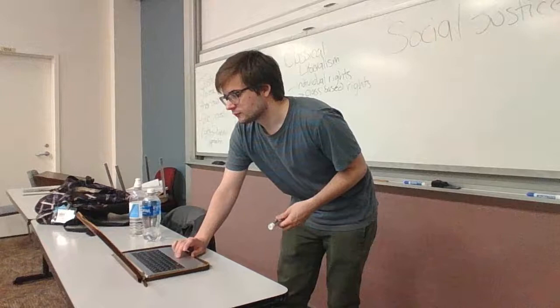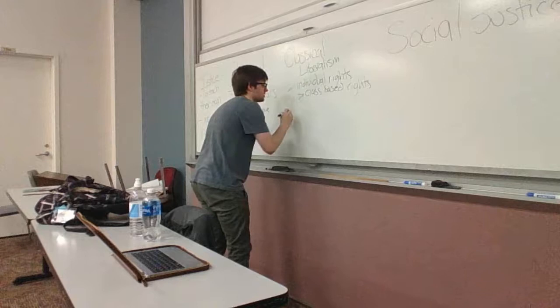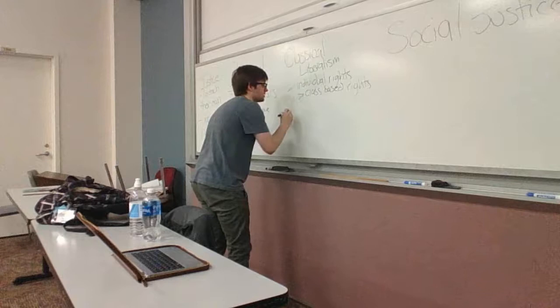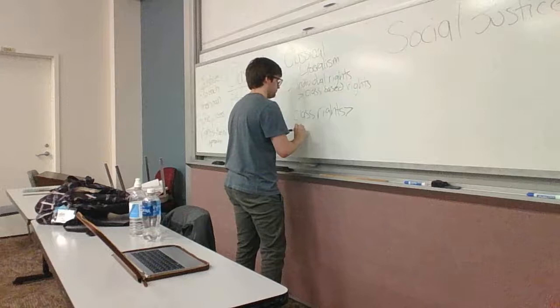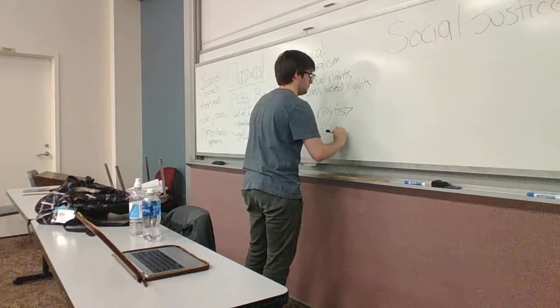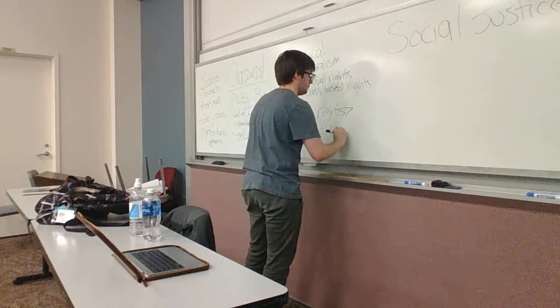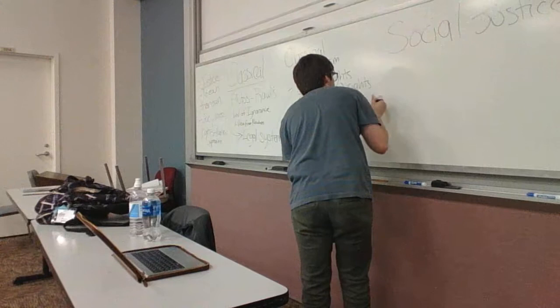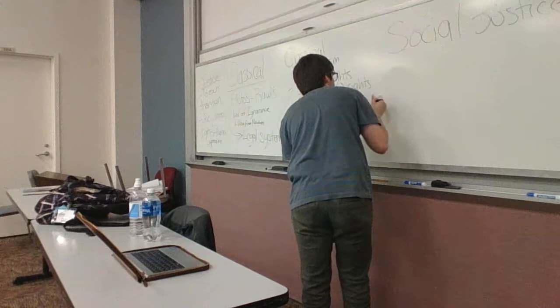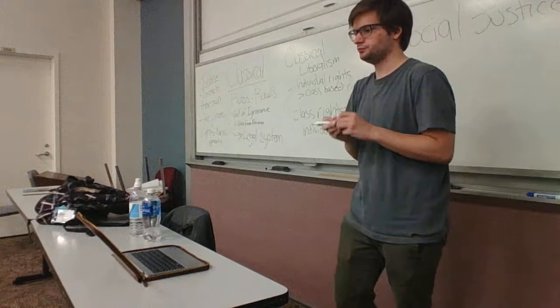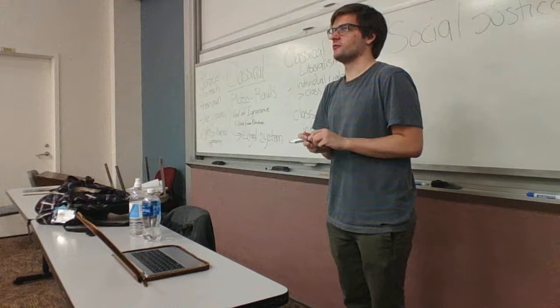The other main approach to legal justice is the opposite: class-based rights over individual rights. This is most commonly called equality under the law, which I'll abbreviate as EUTL. We've already discussed how that is different from and juxtaposed with classical liberalism.